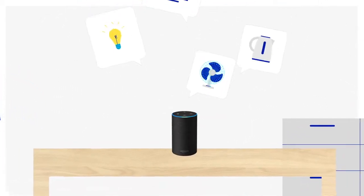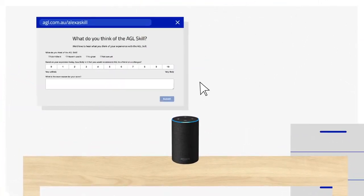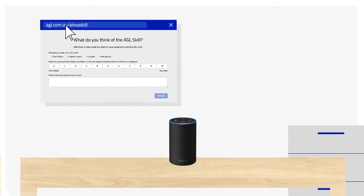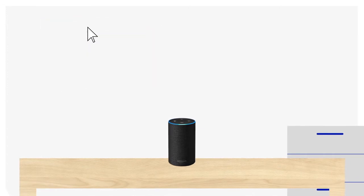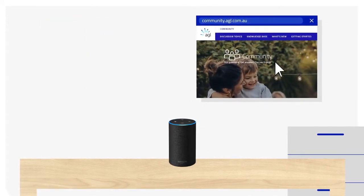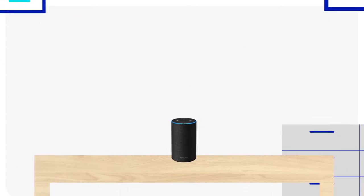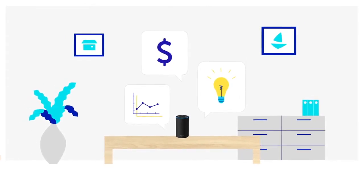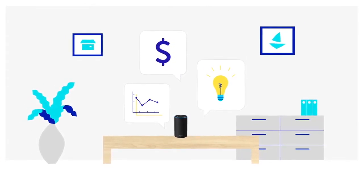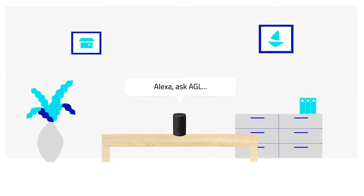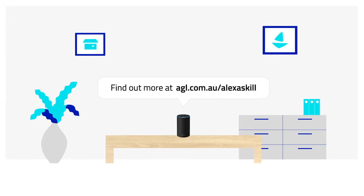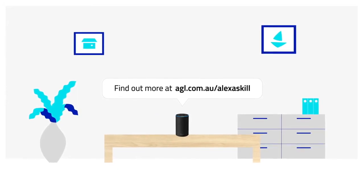We're continually adding voice features to help you easily manage your AGL account. Let us know what you think by completing our survey at agl.com.au/Alexa-skill. Or join the AGL community to discuss the AGL skill. Connect to the AGL skill today and start getting your account information on demand simply by saying, 'Alexa, ask AGL.' Find out more at agl.com.au/Alexa-skill.